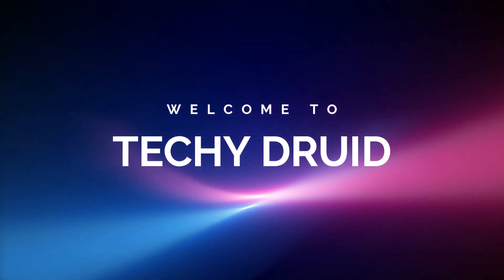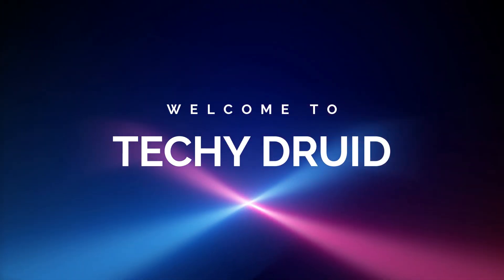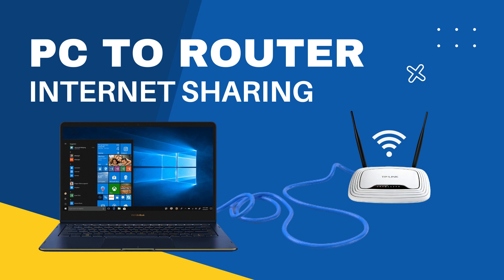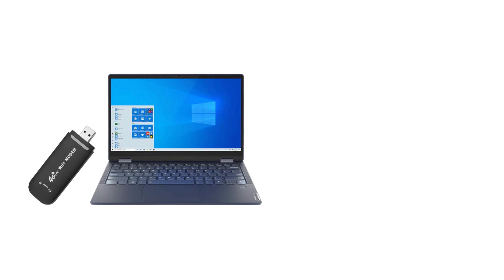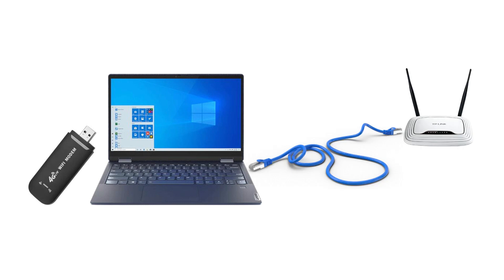Hello guys, welcome to Techie Druid. I'm Milan. In this video, I'm going to show you how to share internet from a PC to a Wi-Fi router. I have a laptop that is connected to a 4G USB modem and I do not have a broadband connection. So I want to share this internet from my PC to a Wi-Fi router so that I can access the internet on my other devices through the router. Let's see how to do that using two inbuilt features in Windows PC.